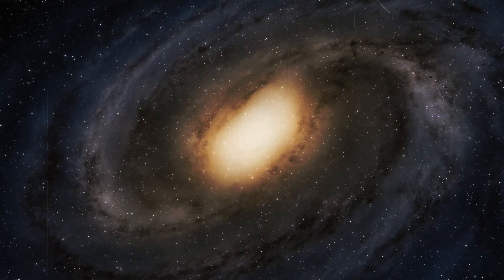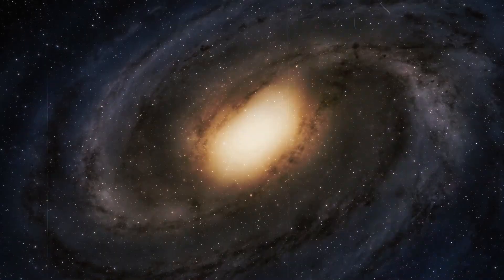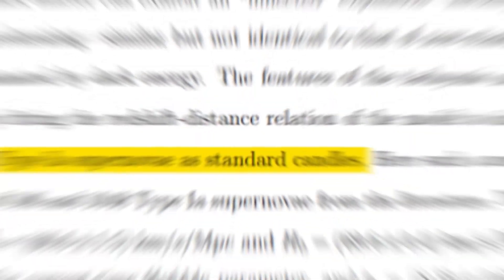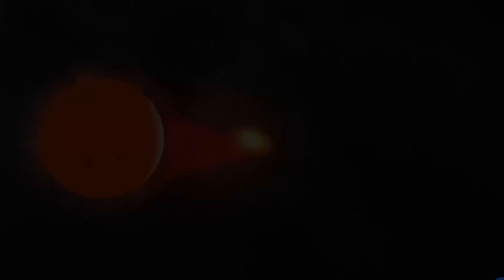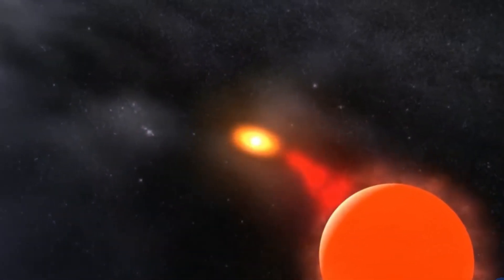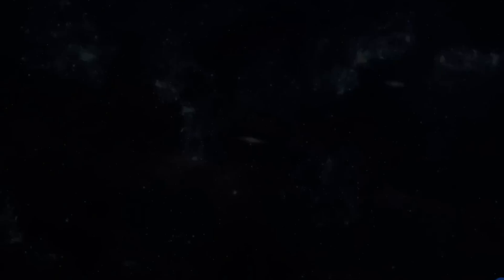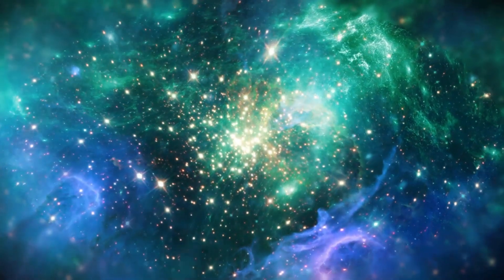To test their theory, Kramer and Redmount turned to Type Ia supernovae, known as the standard candles of the universe due to their consistent luminosity. By measuring the light from these supernovae, scientists can calculate distances across space and track the expansion rate of the universe.